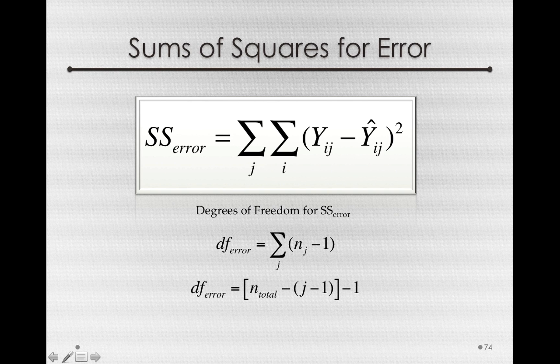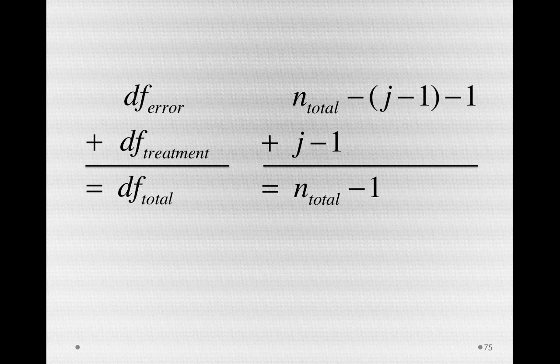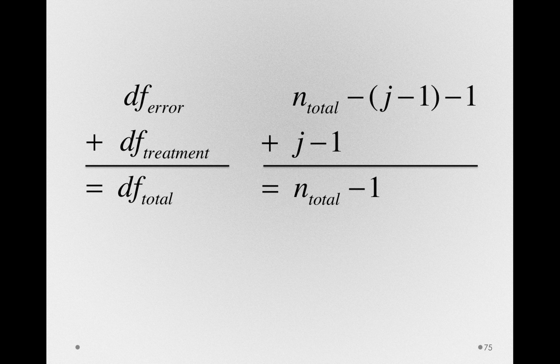Notice that these degrees of freedom, like the sums of squares, simply add up. The degrees of freedom for error plus the degrees of freedom for treatment simply equal the degrees of freedom total.